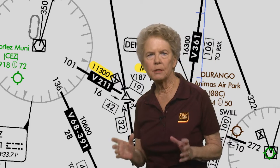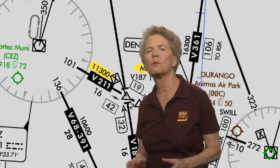The minimum en route altitude will be different on different airways and also on different segments of airways, as we saw. The MEA also depends on what the terrain is like and how far apart the navigation stations are.